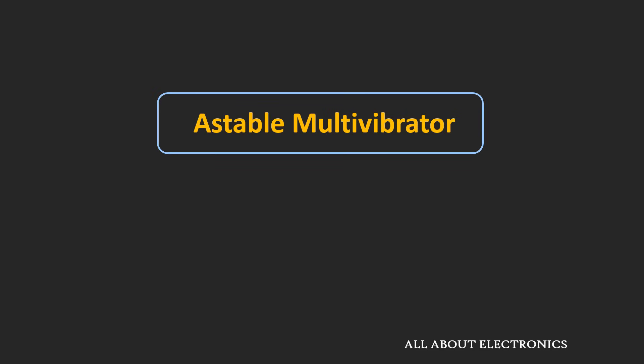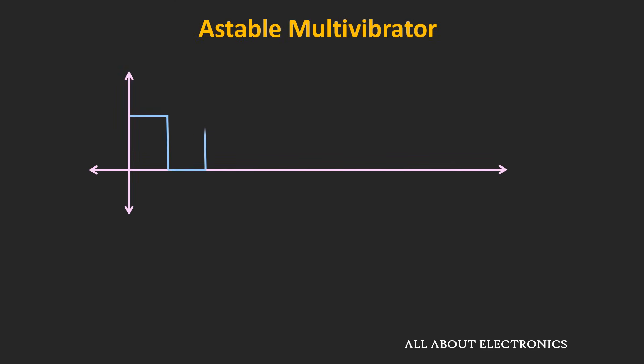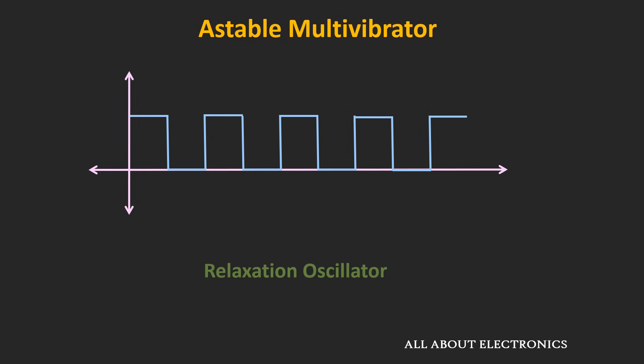In the previous video, we got the general overview about the multivibrator circuit. We had seen that in the case of the astable multivibrator circuit, both states are astable states, and the output continuously gets changed between the two states. We had also seen that this circuit can be used to design a relaxation oscillator — a type of oscillator where the output is non-sinusoidal.